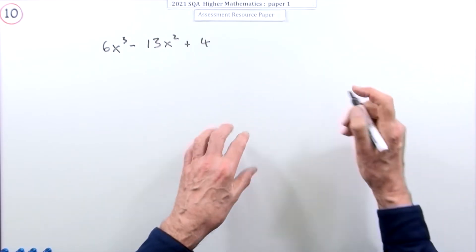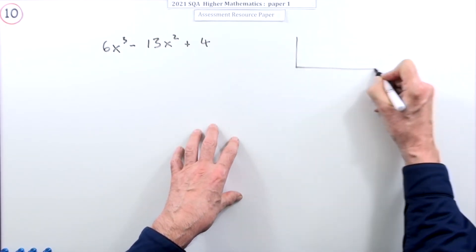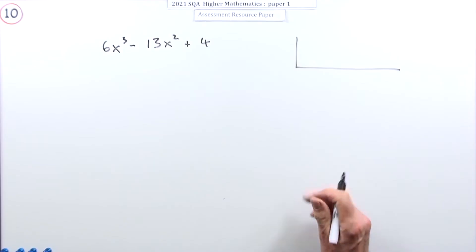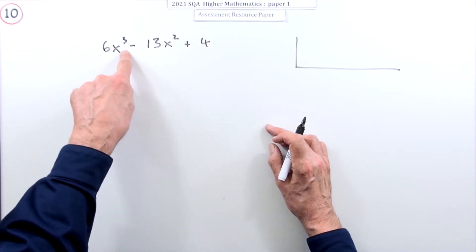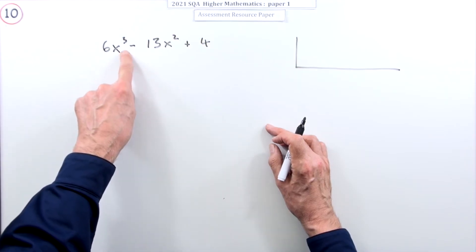Notice there's only three terms but it's a cubic so there should be four terms, so one of them is missing. There'll be a zero here somewhere.